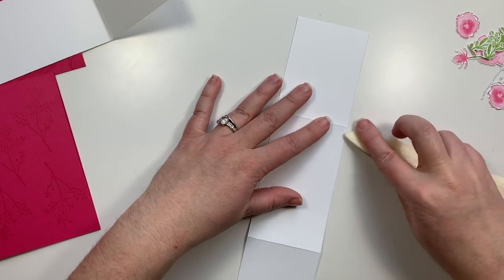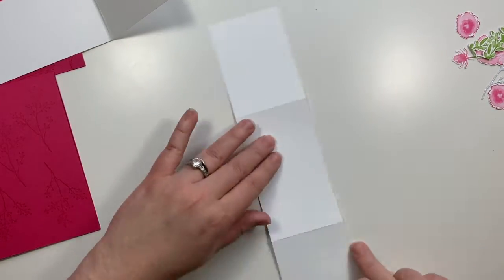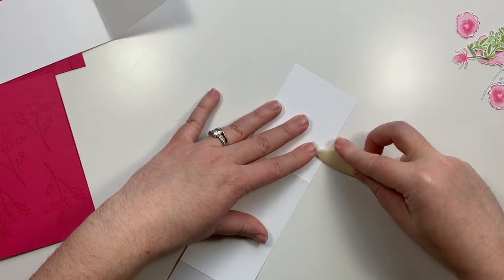And if you see on the edge here, it's very faint, but my trimming blade is a little dull, so it leaves a little bit of a ridge. And to get rid of that, I just take my bone folder and flatten out the edges.